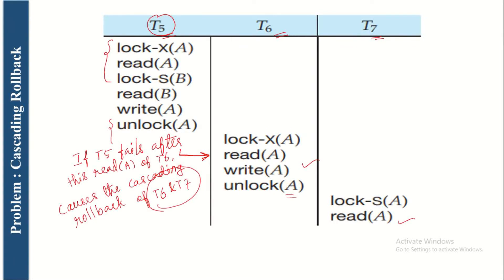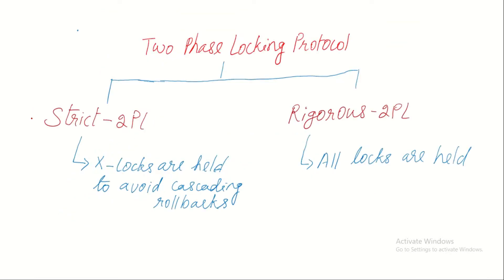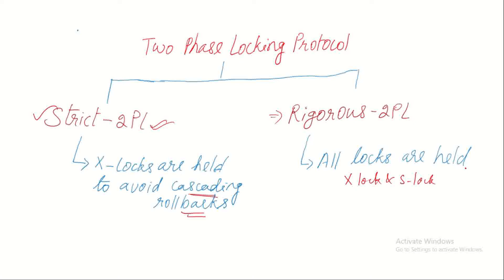To overcome cascading rollback, we can apply the strict two-phase locking protocol, where exclusive locks are held until the transaction successfully commits or aborts. Another variant is the rigorous two-phase locking protocol, where all locks — both exclusive and shared — are held until the transaction commits or aborts. However, applying rigorous 2PL reduces concurrency significantly, making the execution equivalent to a serial schedule.